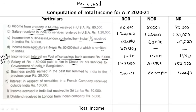Point H: Interest in respect of securities in a French company, received outside India. This is foreign income received outside India, so it is taxable only in case of ROR — Rs. 10,000. It is not taxable for NOR and non-resident.